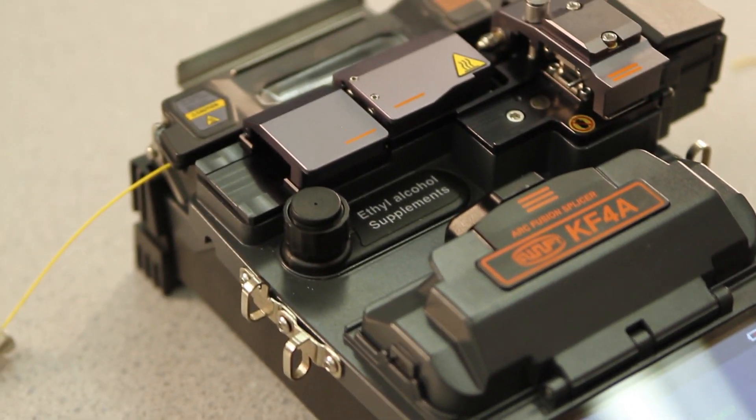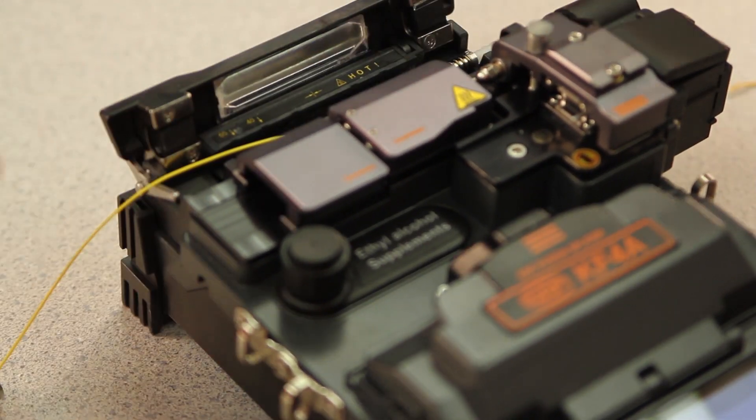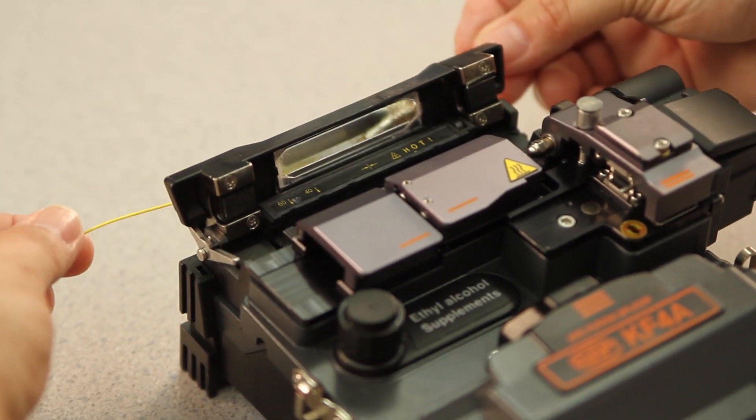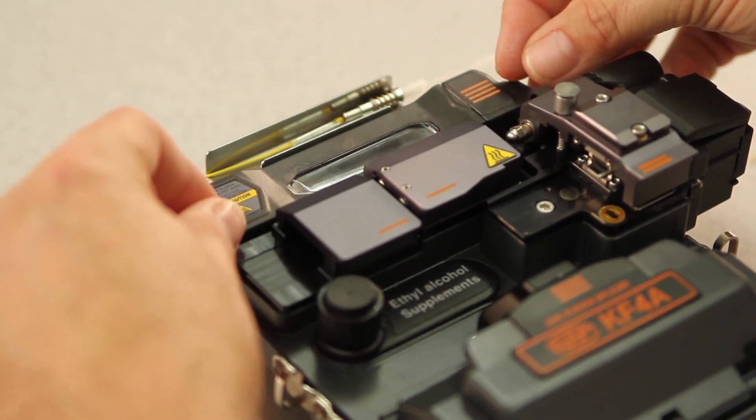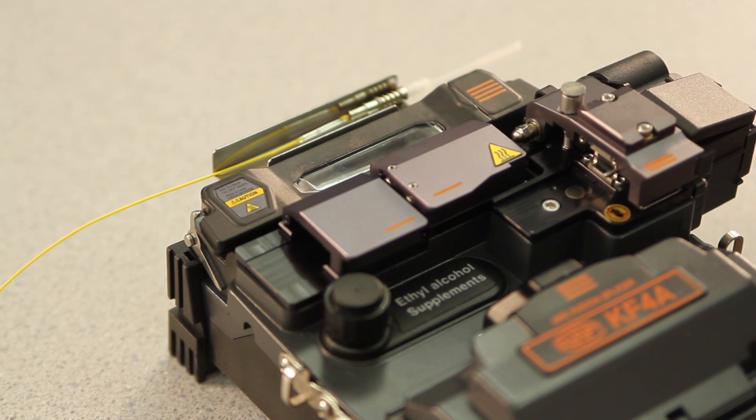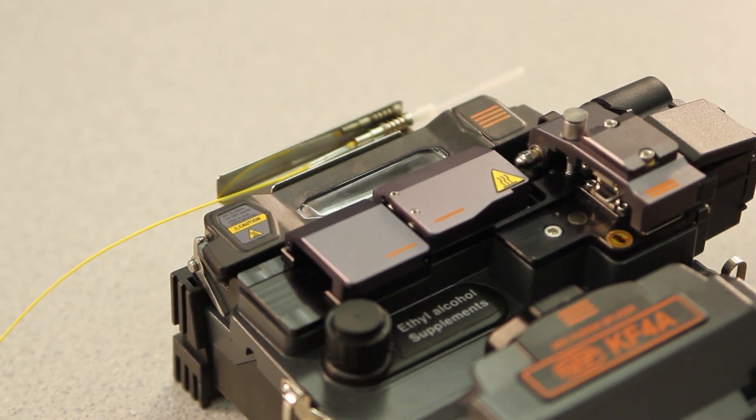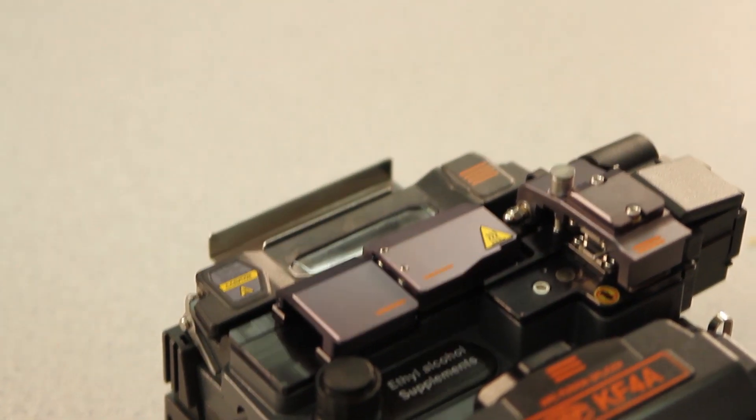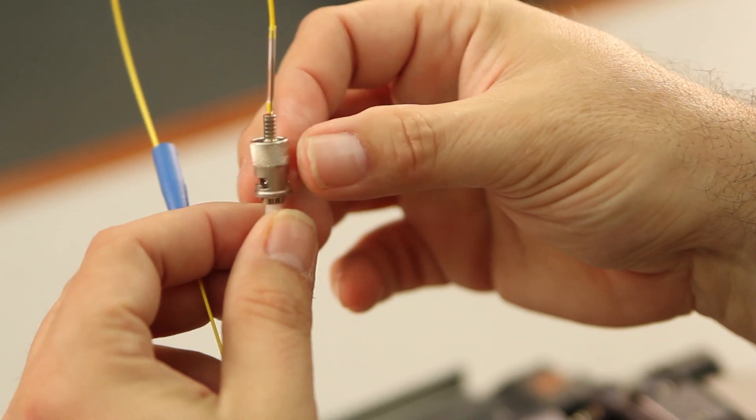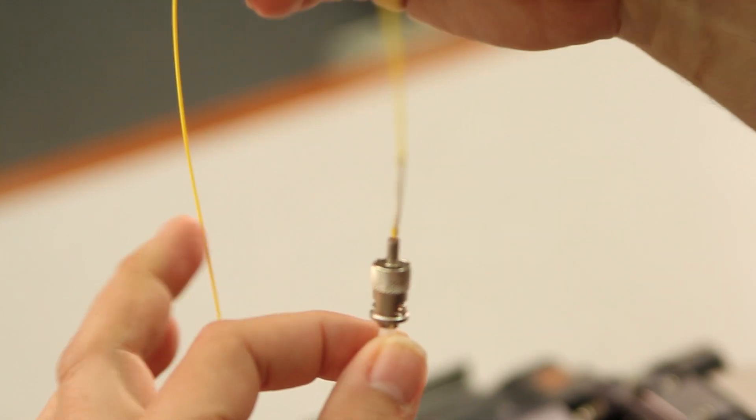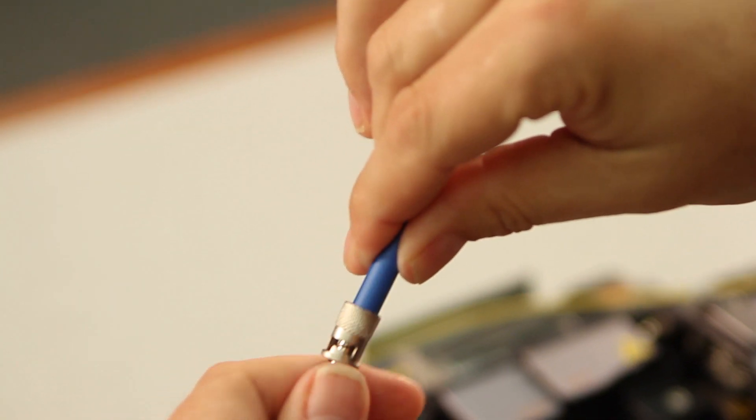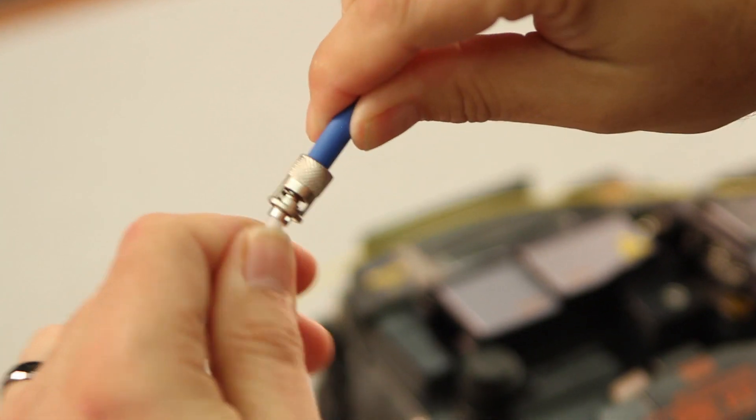Once your oven has turned off, open your oven and place your connector in the cooling tray, allowing it to cool for at least 10 seconds. Once complete, bring your bayonet to the top, then your back boot, firmly pressing the two together.